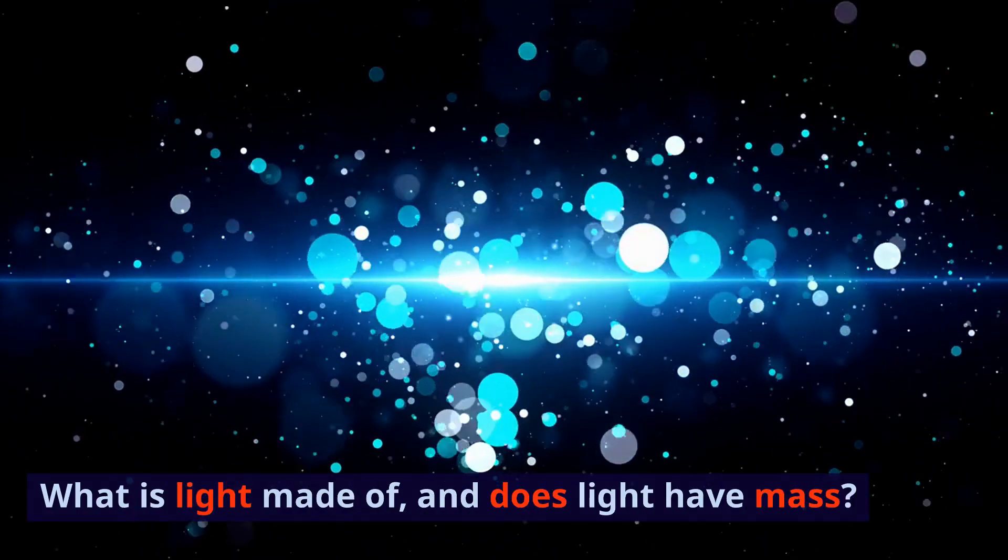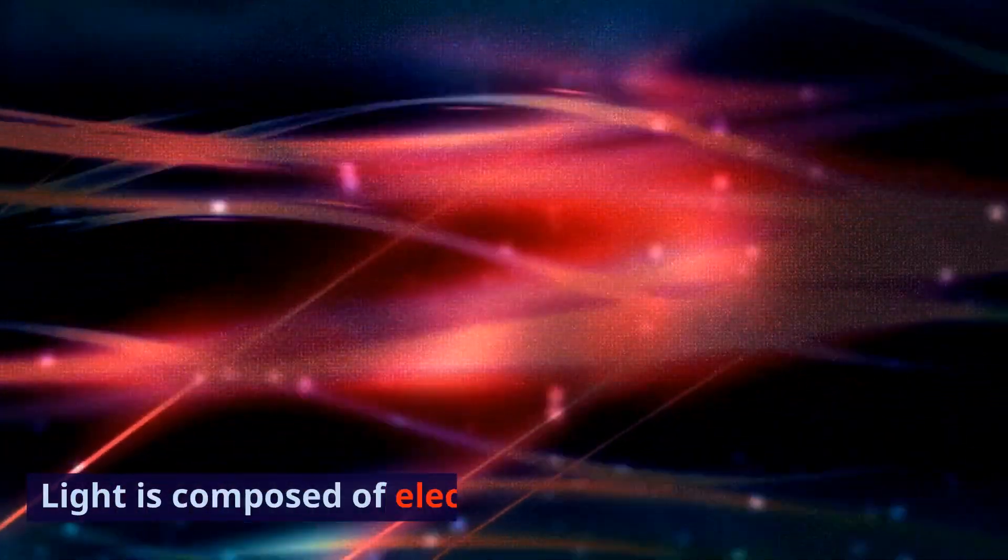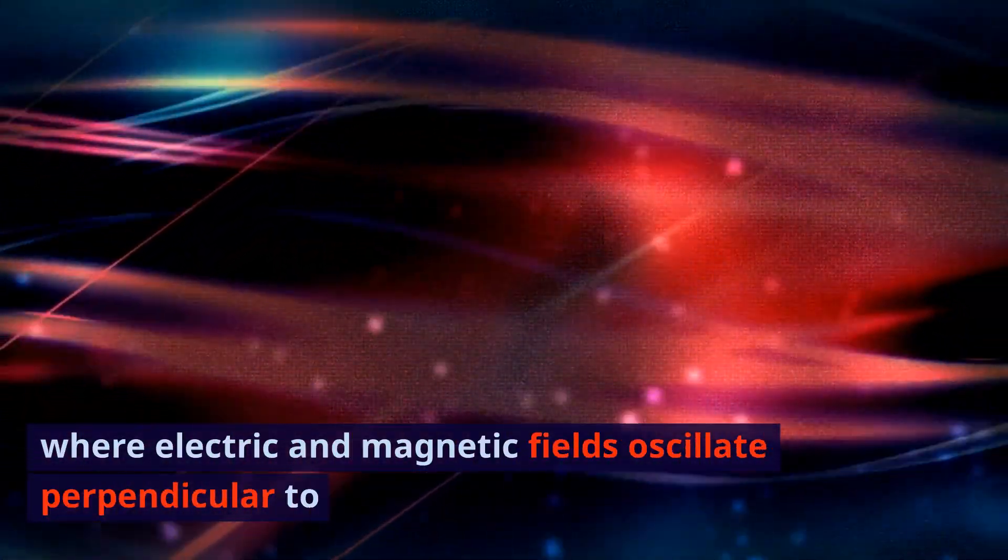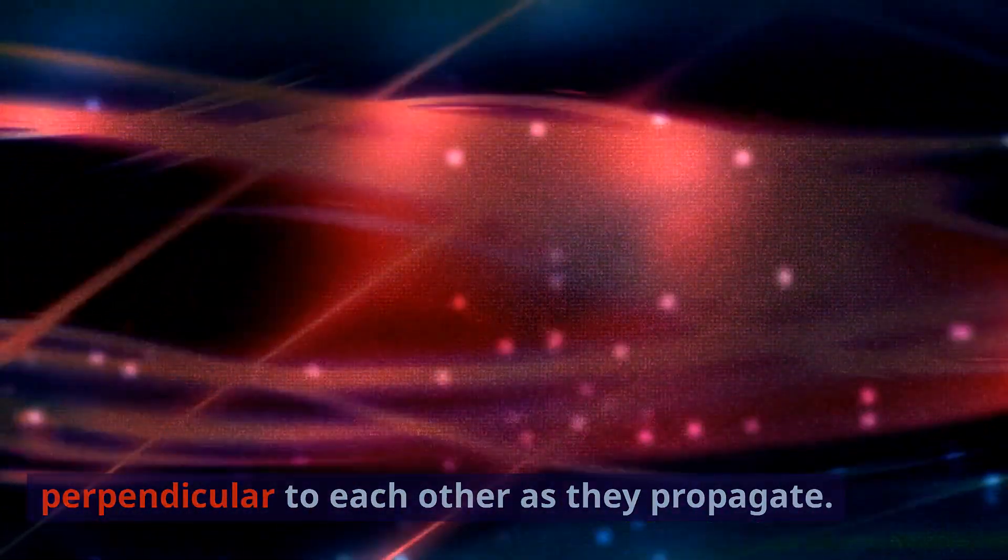What is light made of, and does light have mass? Light is composed of electromagnetic waves, where electric and magnetic fields oscillate perpendicular to each other as they propagate.